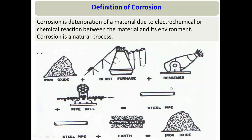In nature, materials try to be at the lowest possible energy level — any process that minimizes free energy becomes spontaneous. So since steel is at a higher energy level, it will spontaneously revert back to iron oxide. That reversion process is called corrosion.